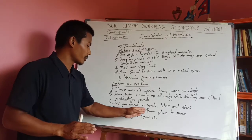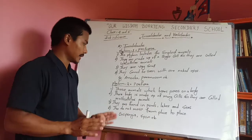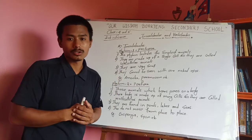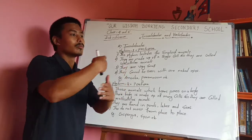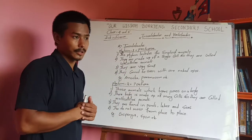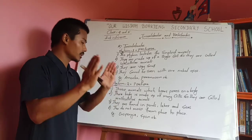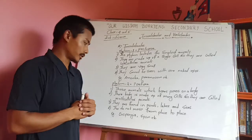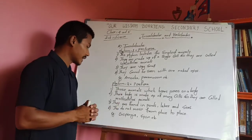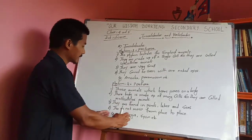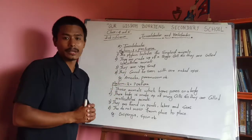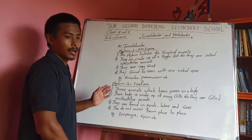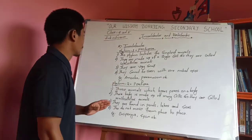These animals cannot move from place to place. They are found in ponds and sea. They are also known as sponges. This is Phylum Porifera.